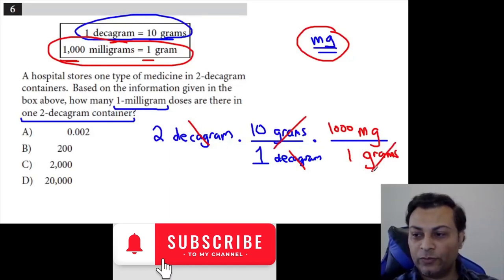These will cancel. And so now we have the answer in milligrams, and this is the answer that we want. So we have to do two times ten times a thousand, and then divide it by one.